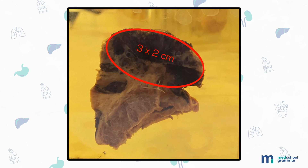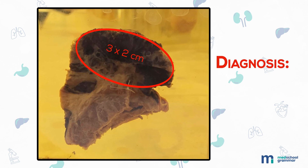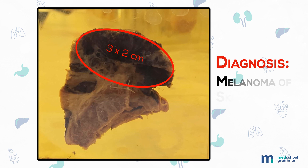Moving on, we have a specimen of skin measuring 4 centimeters in length with subcutaneous fat. A 3 by 2 centimeter black oval mass is seen arising from the skin. This is a specimen of melanoma of skin.